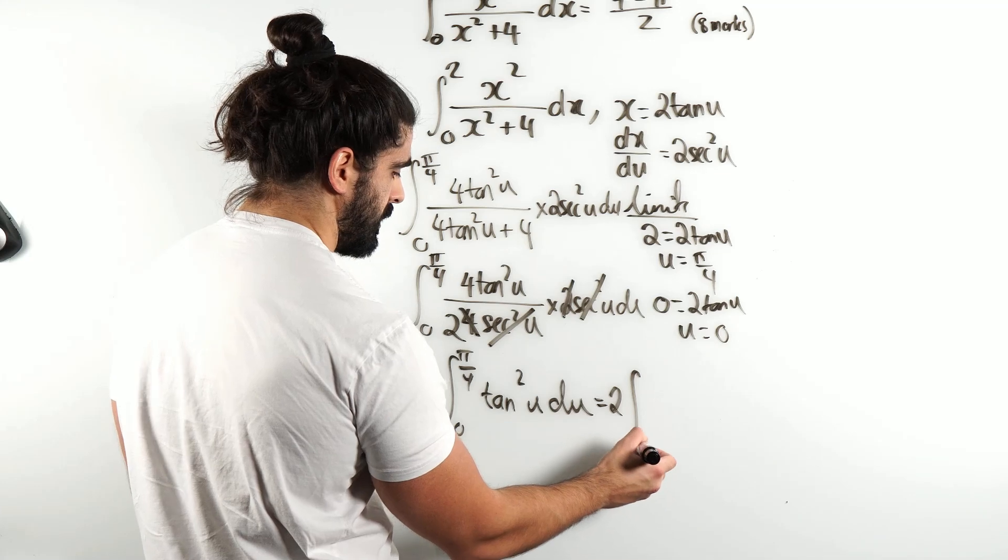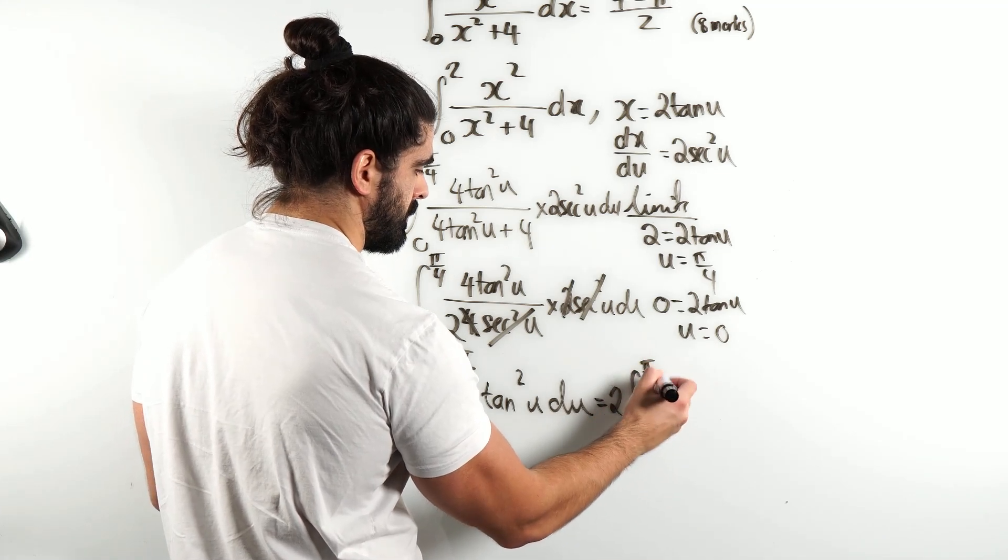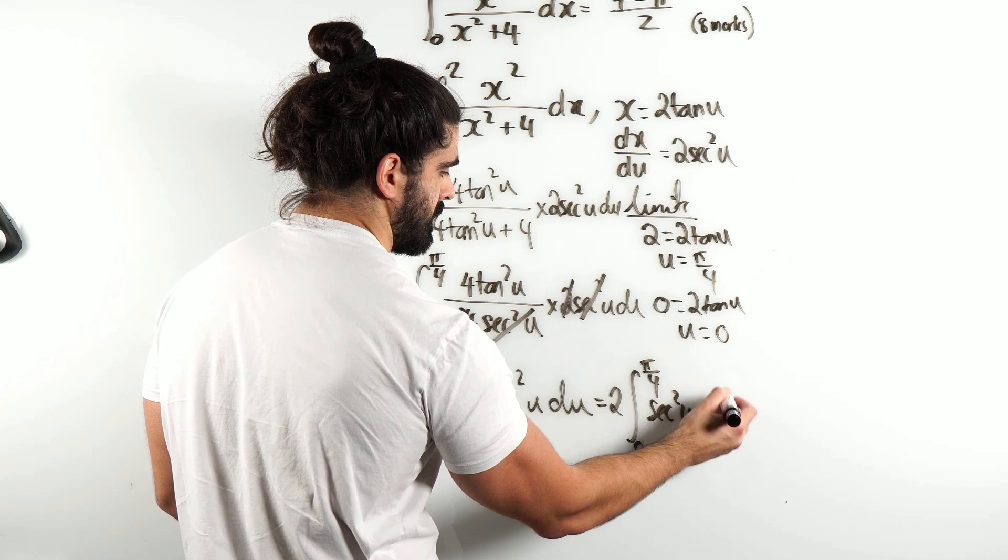So we have 2 times the integral from 0 to π/4 of sec²(u) - 1 du.